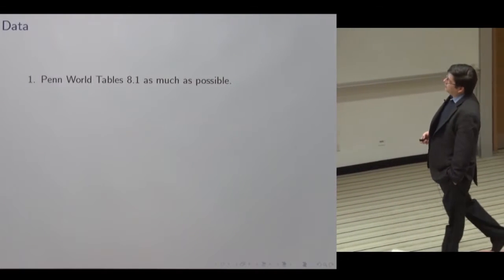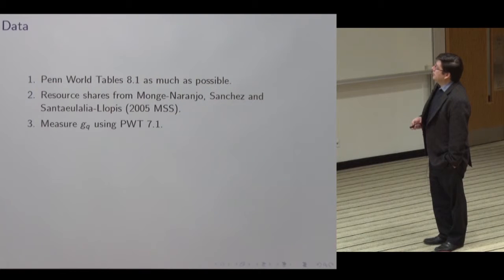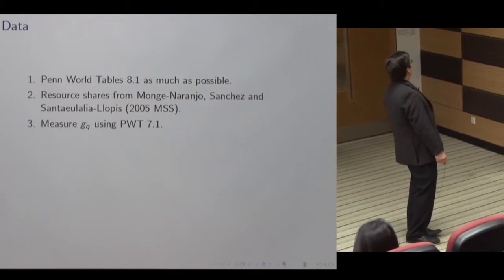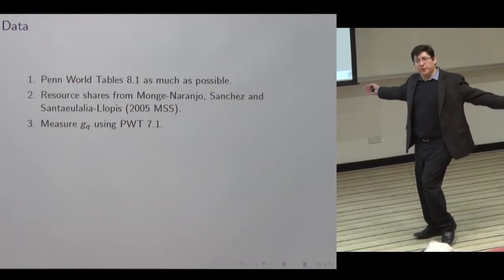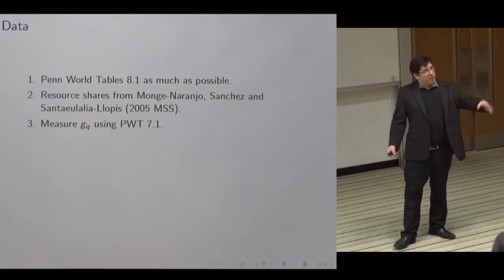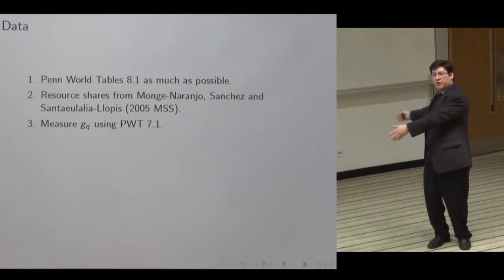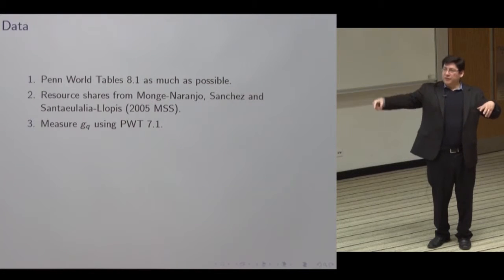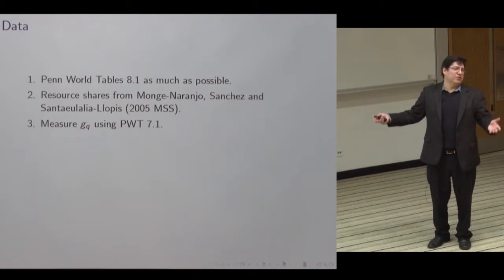The data, as Rachel was saying, is from the Penn World Tables, the latest edition as much as possible. Resource shares are from MSS. To measure GQ, we actually use an older version of the Penn tables, and there's a good reason for that: the more recent Penn tables have several benchmark years for measuring prices, and in a benchmark year when you're measuring PPP, you're using some average of what a sector makes and what nearby countries make, and you're only sampling goods for which you can find comparable things in both countries. So it's not actually measuring the price of capital directly, and we want growth rates not levels.